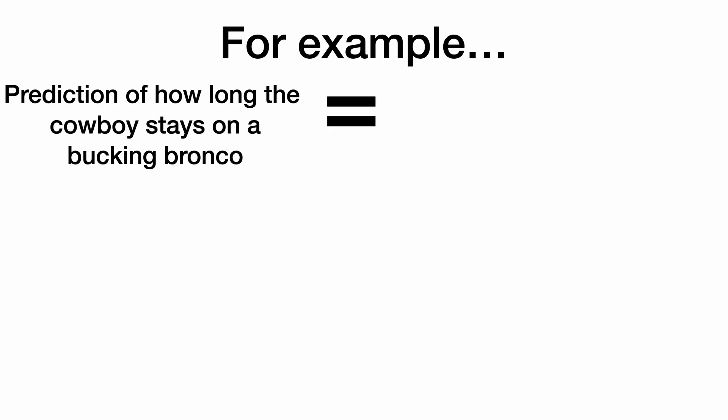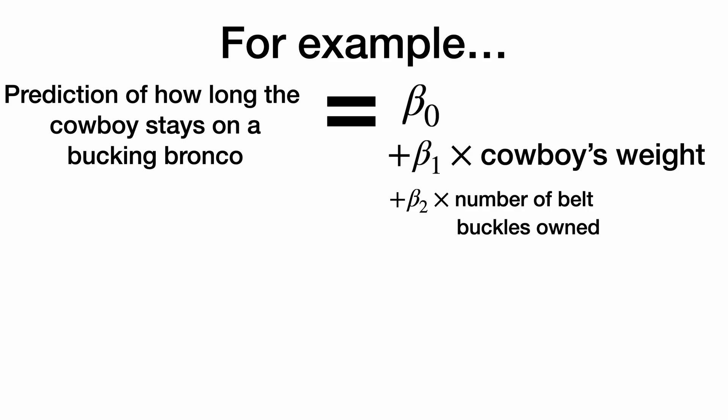Our prediction of how long the cowboy stays on his bucking bronco is a linear function. Beta zero, plus beta one times the cowboy's weight, plus beta two times the number of belt buckles the cowboy owns, plus beta three times his years of rodeo experience, plus beta four times whether or not they shout, yee-haw!